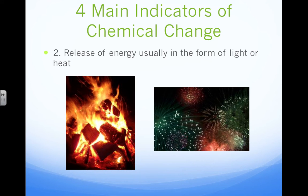The second main indicator of chemical change is a release of energy, usually in the form of light or heat. For example, a campfire is actually a chemical change occurring. We can talk about how the wood and oxygen interact — this interaction is giving off heat. We know a chemical change has occurred because of how these two substances are interacting with one another and giving off heat.